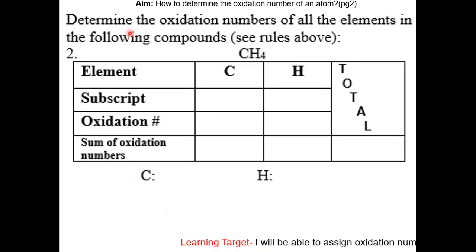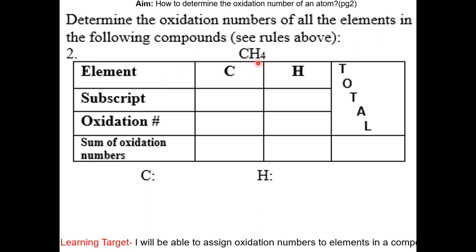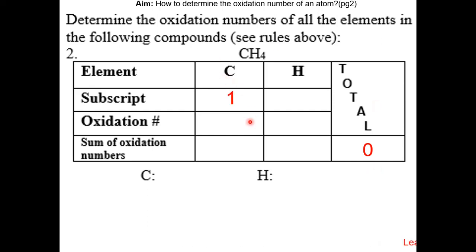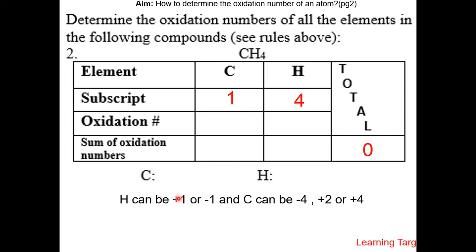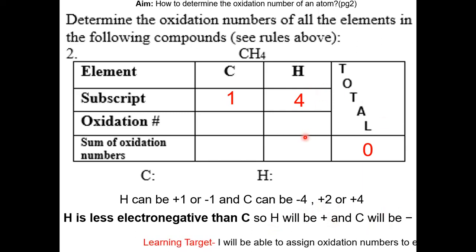In practice number one, we'll be determining the oxidation numbers of all elements in the following compounds using a table to organize the information. Let's look at CH4. Since CH4 is a neutral compound, the sum of oxidation numbers should be zero (rule five). Carbon has a subscript of one and hydrogen has a subscript of four. Since H is less electronegative than carbon, H will be positive and carbon will be negative. So hydrogen has an oxidation number of positive one and carbon has an oxidation number of minus four.